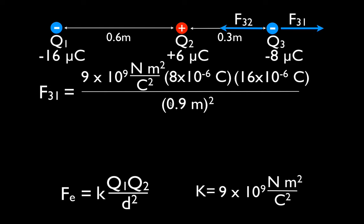Also remember the distance has to be squared — it's 0.9 squared — and the meters squared will also cancel, leaving us with Newtons. One other important thing: when we calculate the magnitude of the force, we just use the magnitude of the charge. We don't use the negative sign. The direction of the force is determined by comparing whether they're like charges or opposite charges. To determine the magnitude, we use the magnitude of the charge, leaving the negatives off. So we multiply K times the charge of Q3 times the charge of Q1, divide by the distance squared, and we get that the magnitude of F31 is 1.42 Newtons to the right.